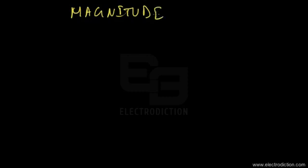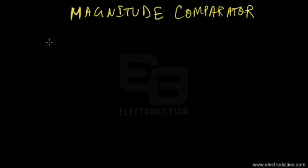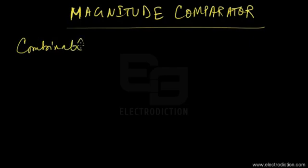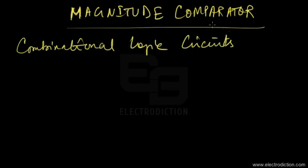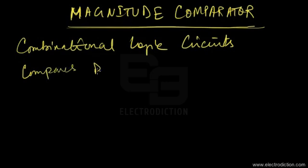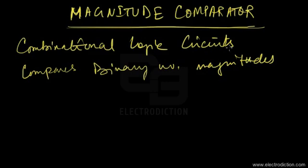Hello and welcome to this tutorial on digital electronics. Today we shall discuss magnitude comparators. As you may have already understood from the name, this circuit compares magnitudes — specifically, it compares the magnitudes of binary numbers. This circuit comes under the category of combinational logic circuits in digital electronics.